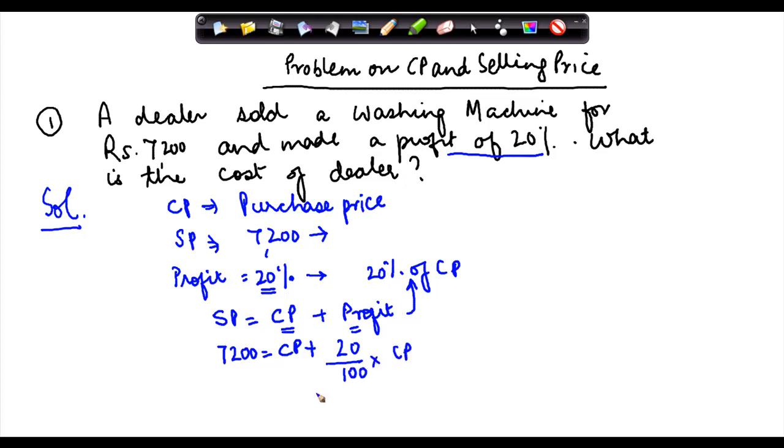Now I have been told to find out what is the cost price. If I were to rewrite the right hand side of the equation, then I can also write this as cost price into 100 divided by 100 plus cost price into 20 divided by 100.